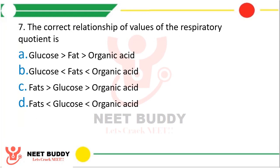Question 7: The correct relationship of the values of respiratory quotient — option A highest in glucose, followed by fat, then organic acid; option B highest in organic acid, followed by fat, then glucose; option C highest in fat, followed by glucose, then fat; option D highest in organic acid, followed by glucose, then fat. The correct answer is option D — highest in organic acid, followed by glucose, then fat.